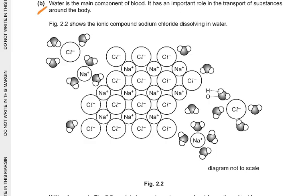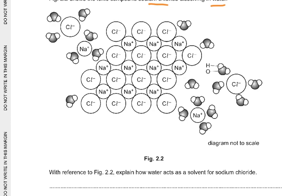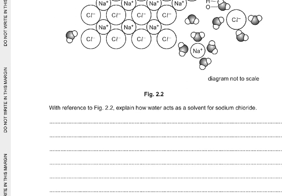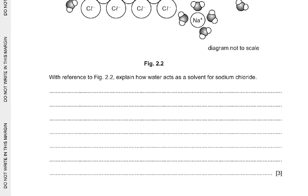Part B: Water is the main component of blood and has an important role in transporting substances around the body. Figure 2.2 shows the ionic compound sodium chloride dissolving in water. With reference to Figure 2.2, explain how water acts as a solvent for sodium chloride — three marks.